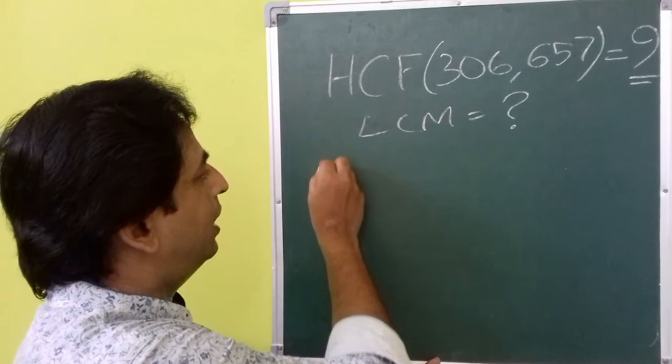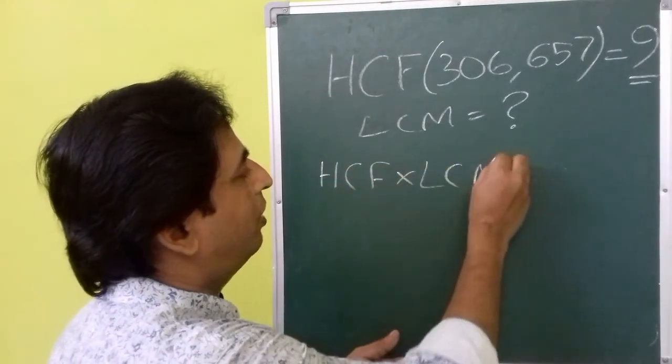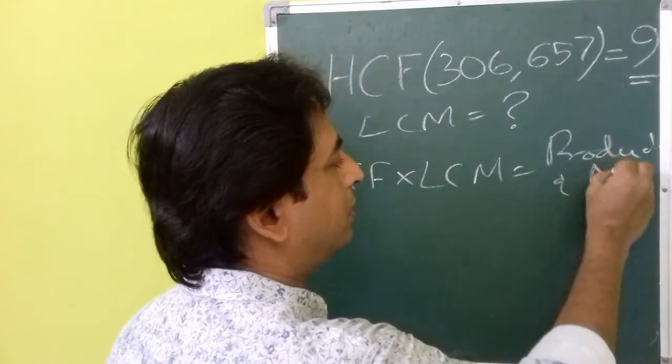So here we know that HCF multiplied by LCM will be the product of the numbers.